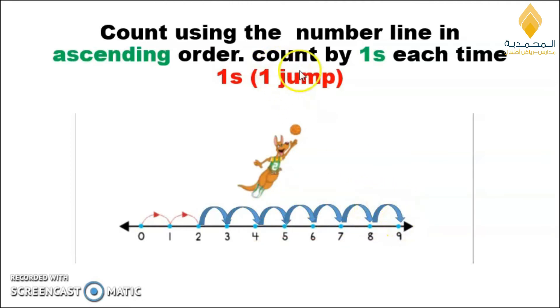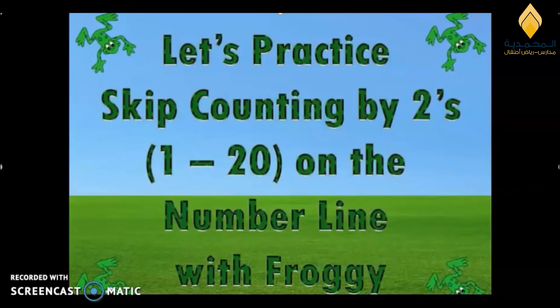Now let's practice skip counting by twos from 1 to 20 on the number line with the froggy. Twos means two jumps each time. Repeat: twos means two jumps.